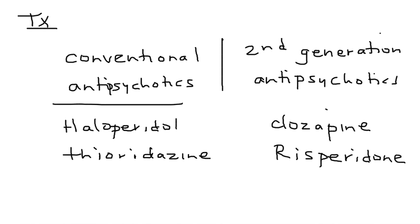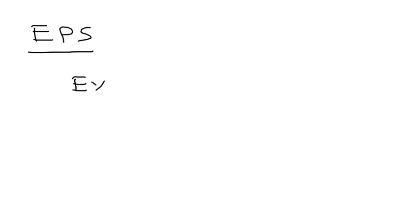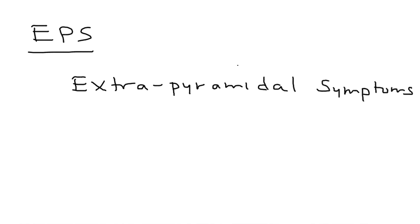The second-generation antipsychotics came about because they have fewer side effects than the conventional ones — that's really the main reason. The side effects of antipsychotic medications are very commonly tested and are known as EPS — extrapyramidal symptoms. These are the side effects of antipsychotic medications.